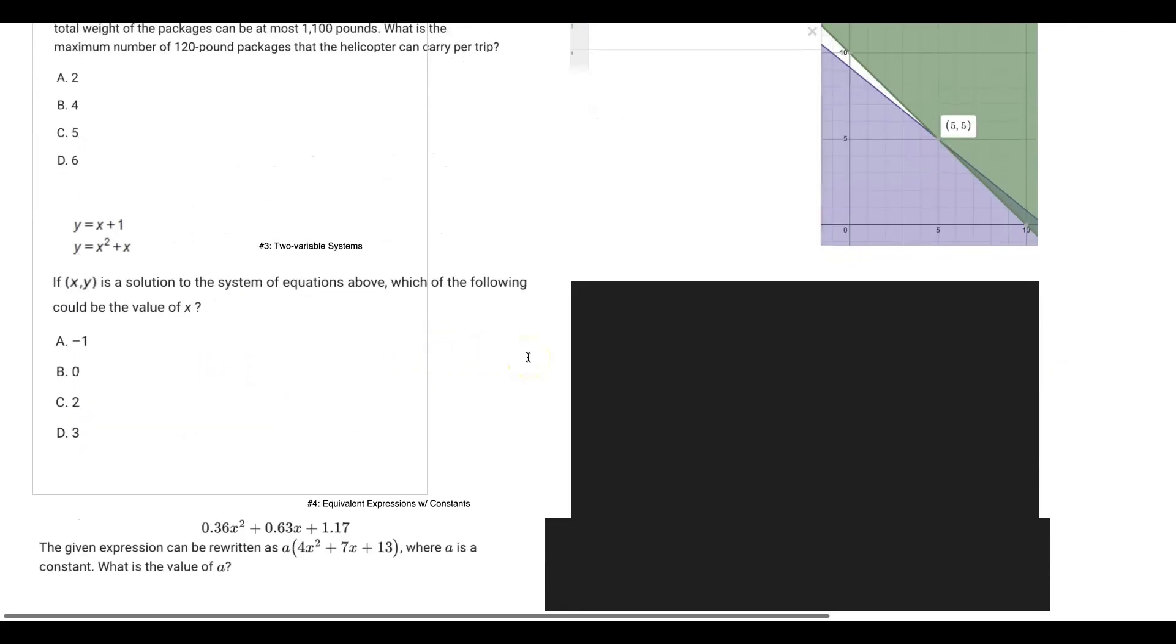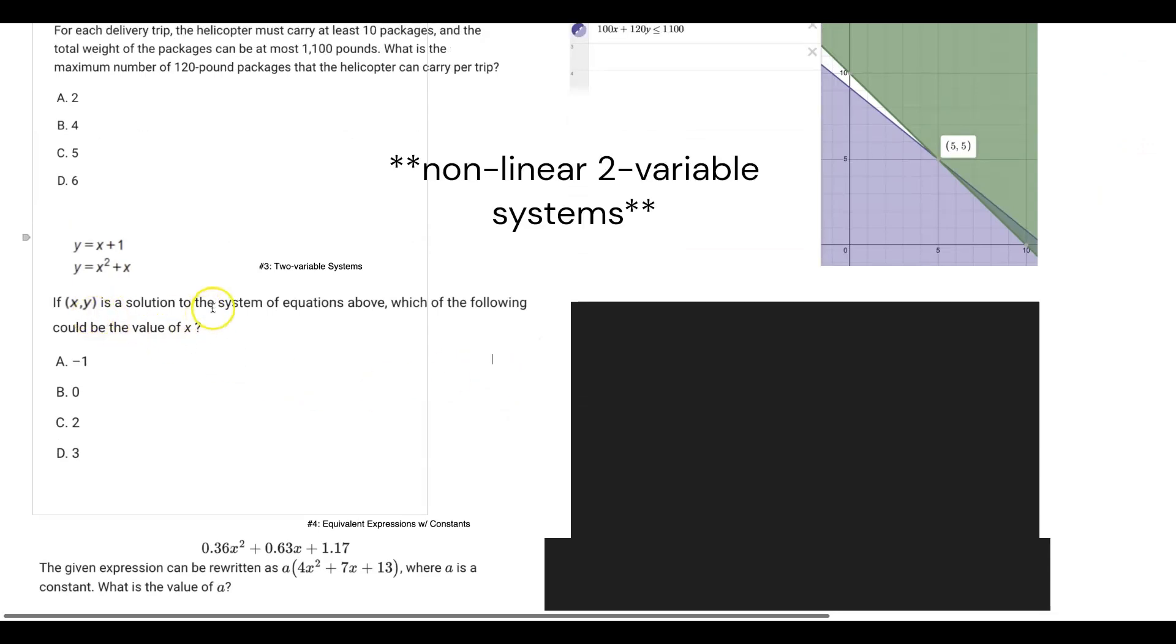Moving on, we have two variable systems. This one says if (x, y) is a solution to the system above, which of the following could be the value of x? Very straightforward.